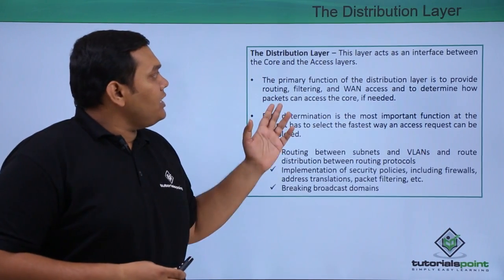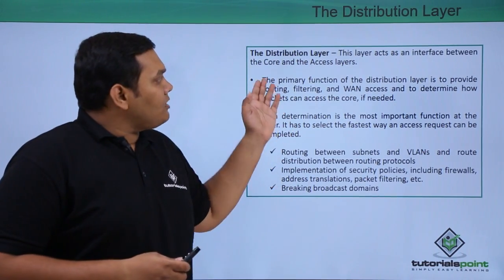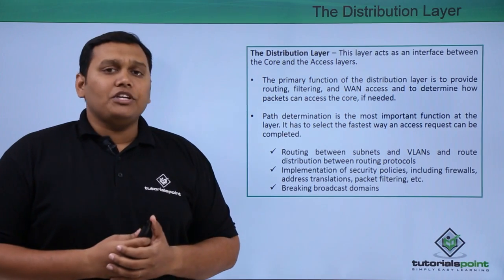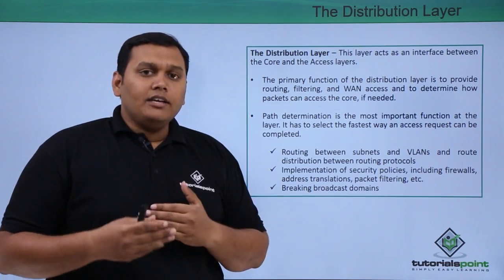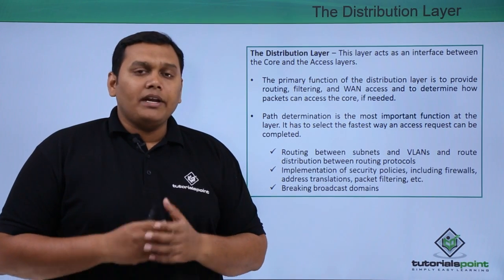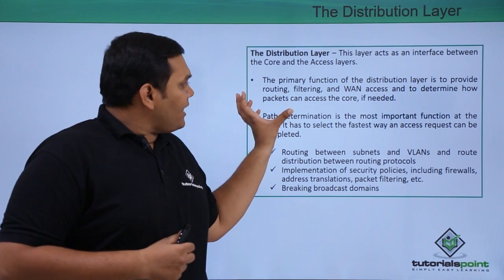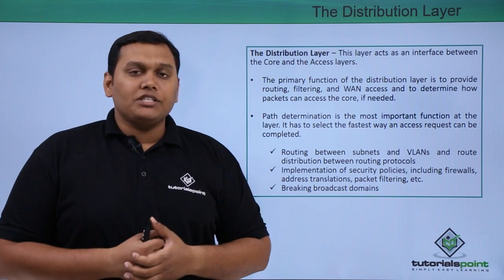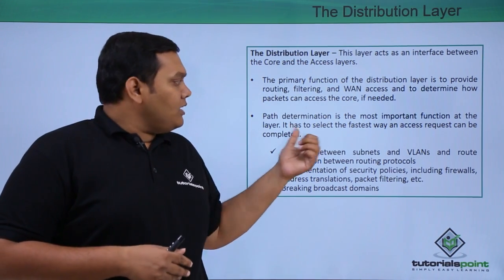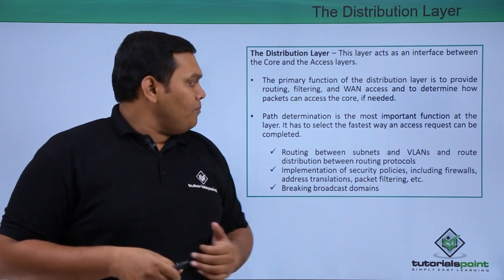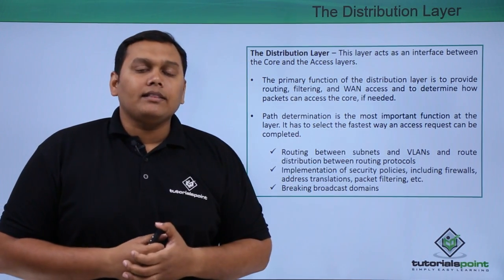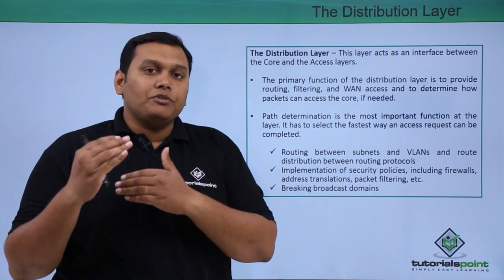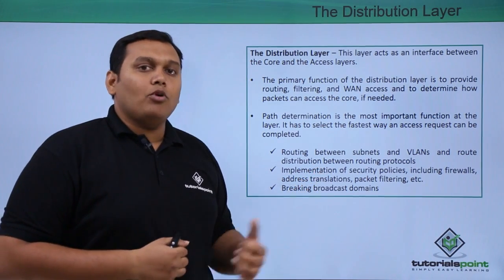The next layer is the distribution layer. This layer acts as an interface between the core and access layers. The primary function of the distribution layer is to provide routing, filtering, and WAN access to determine how data is transferred in the form of packets and can access the core if needed. Path determination is a most important point here — it will choose the best path in a short time. Routing between subnets and VLANs and route information passed through routing protocols plays a key role here.